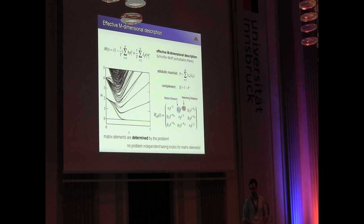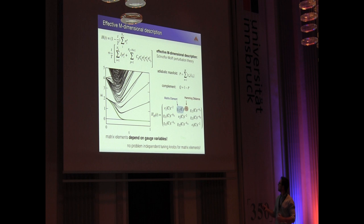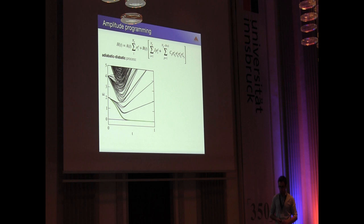So what happens with our effective description when we change from the logical problem into the LHZ problem? Clearly we get access to the matrix elements because they become suddenly gauge dependent. So we introduce problem-independent tuning knobs for tuning the probabilities in the end. However, this exponent with the Hamming distance is still here. So what one has still to do is to find a sweet spot where these tunable matrix elements are impactful.